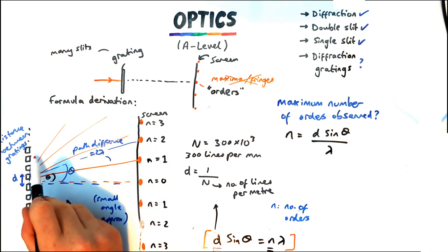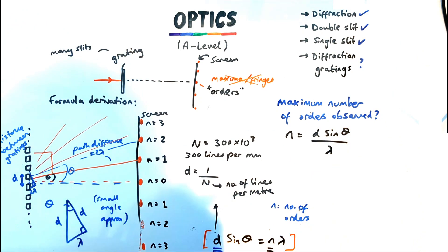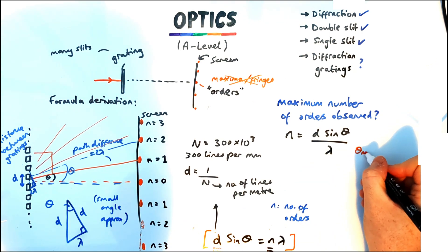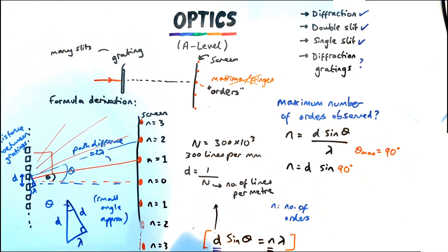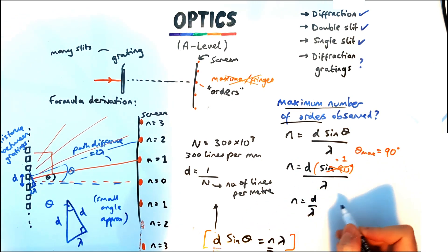So sine 90 is 1 so that makes our equation a bit easier. It means number of orders equals d the diffraction grating spacing divided by the wavelength. Now you'll have an answer you need to round it down because you can only have a whole number of orders. So for example if it's 5.7 then it's five orders maximum that are visible.